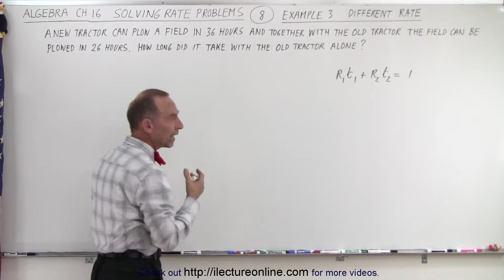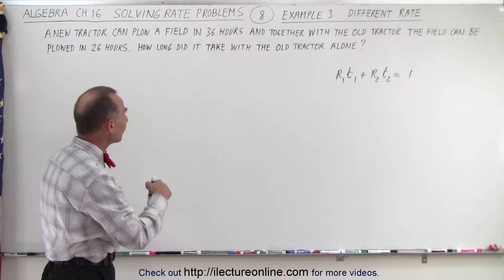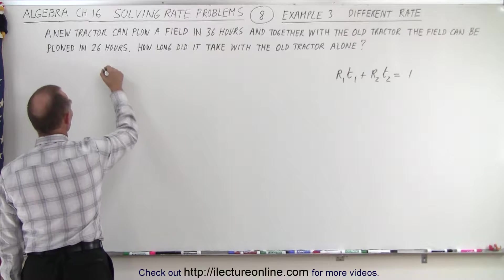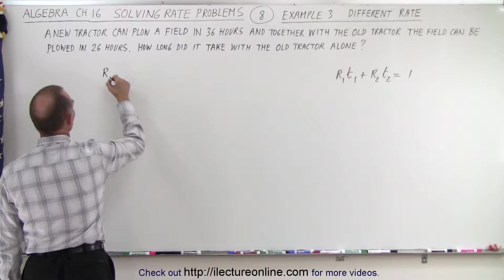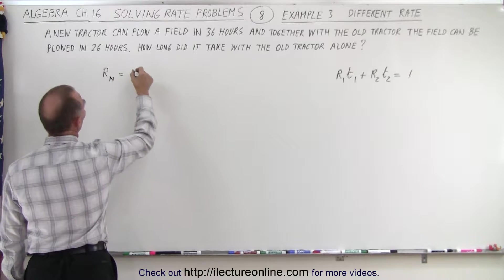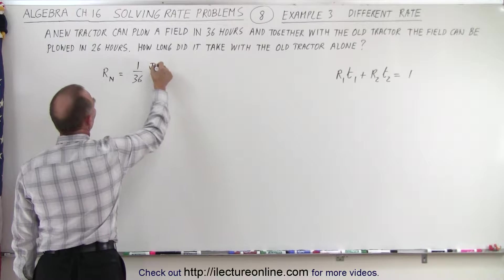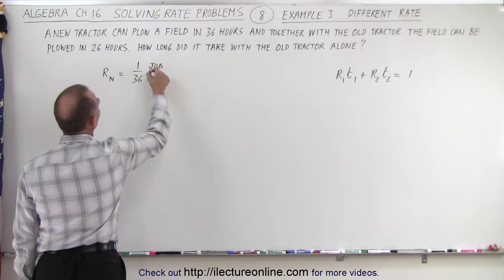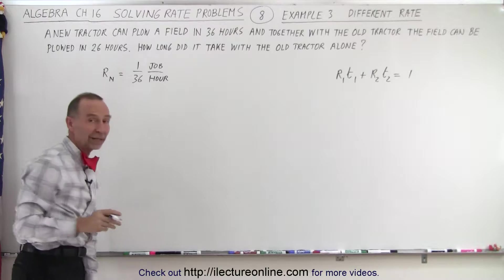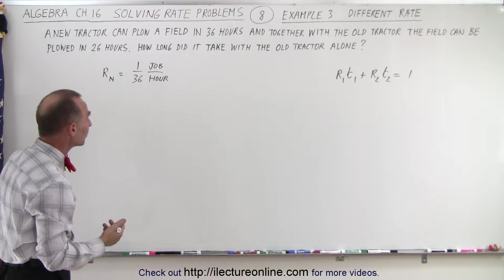What is the rate of the new tractor? The rate is the inverse of the time by itself. So the rate of the new tractor is equal to 1 over 36 of the job done in one hour. We take the time it takes to do the job by itself and take the inverse — that becomes the rate.